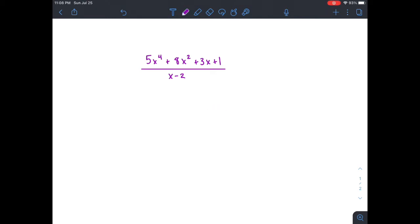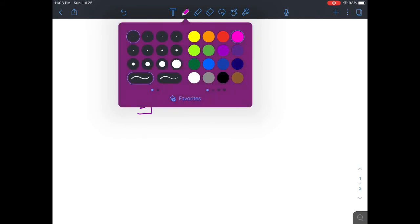Okay, so let's get started. First, we take what is the root of this equation right here, x minus 2. The root is just 2, if we set it equal to 0. So we're going to box that off to the side. Now we write in the coefficients.